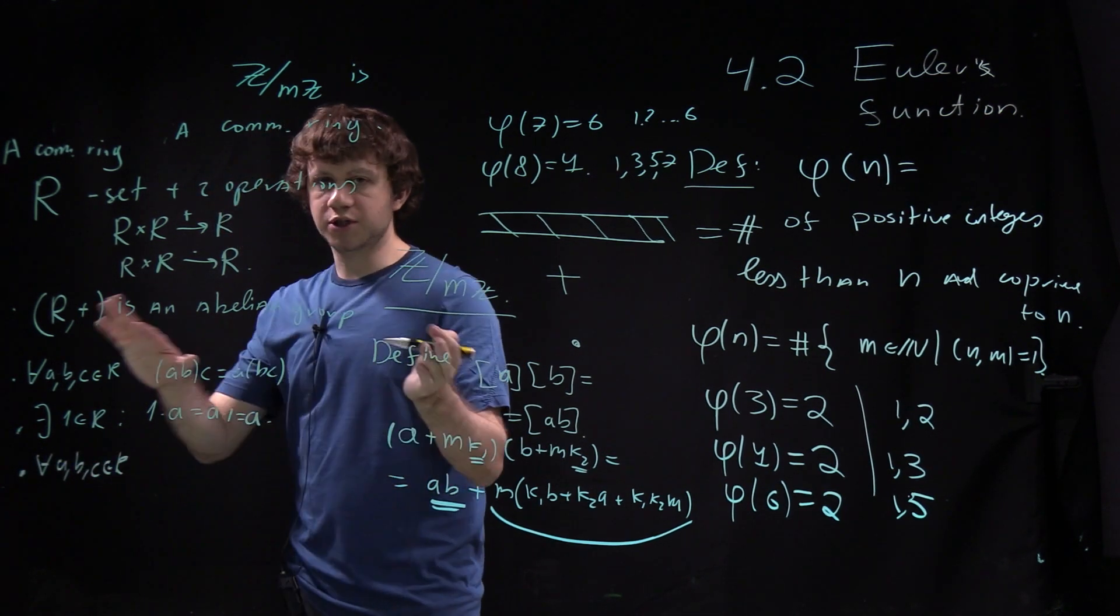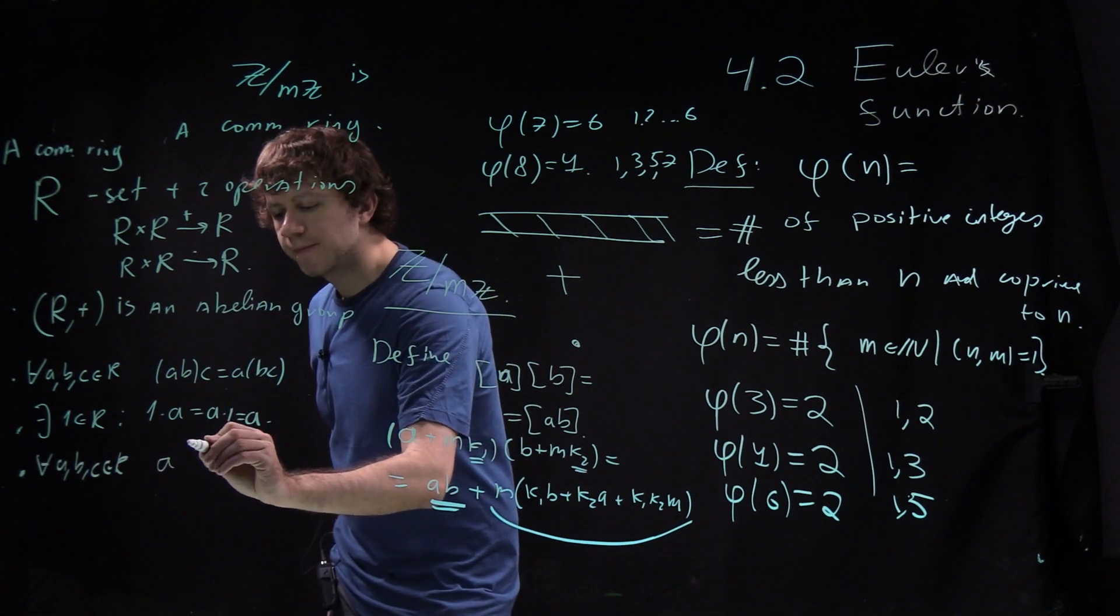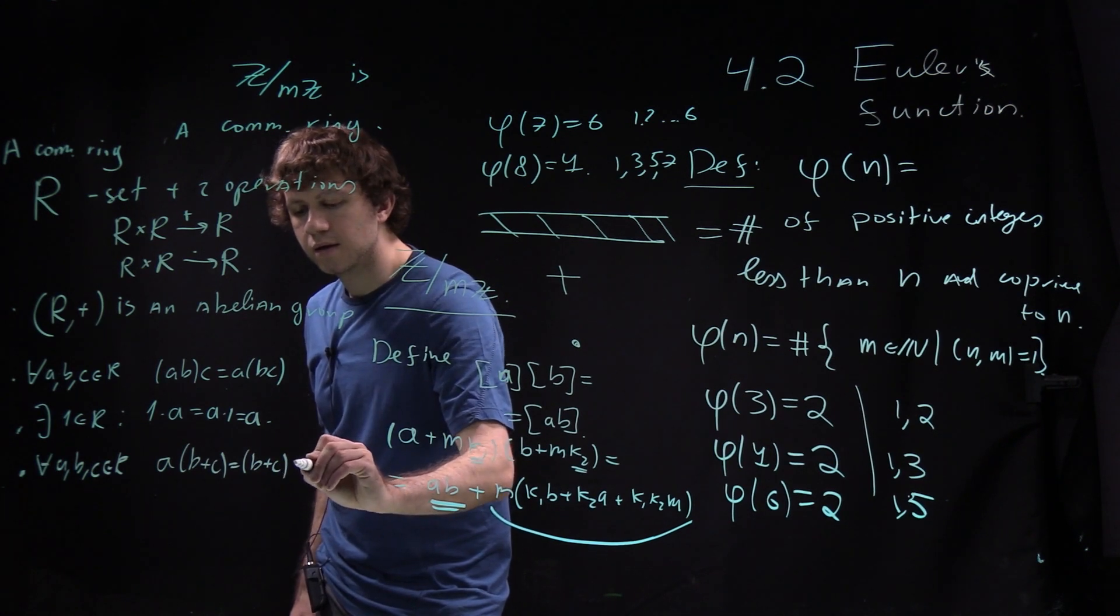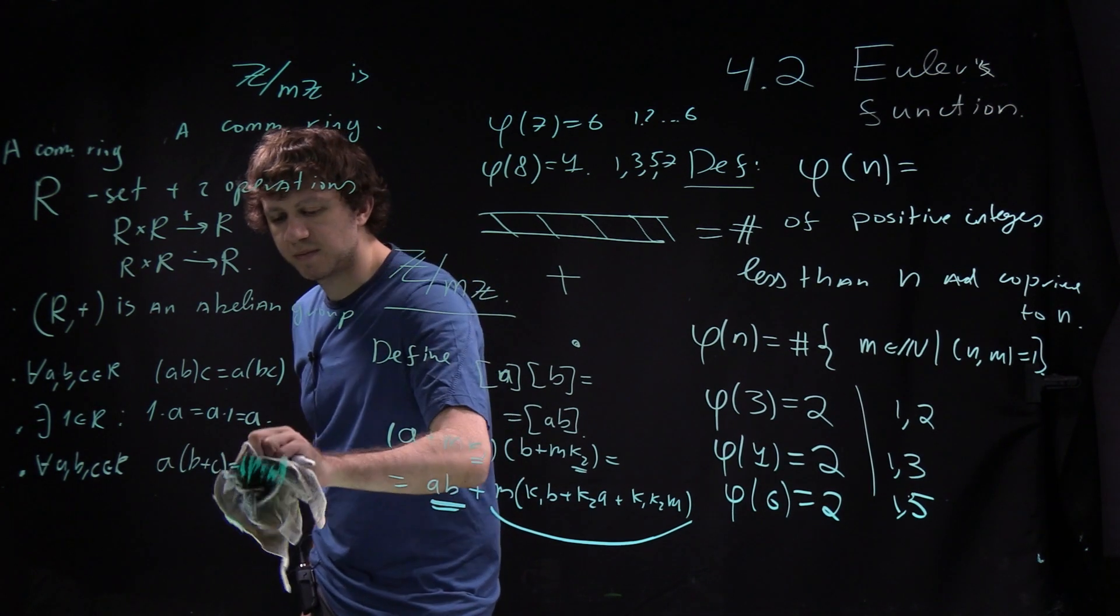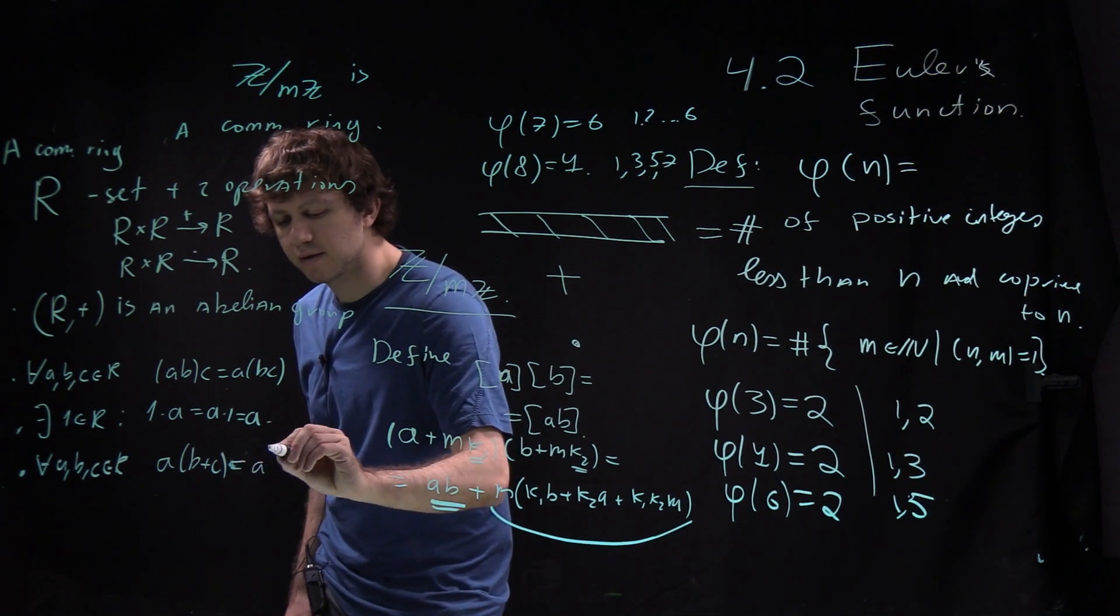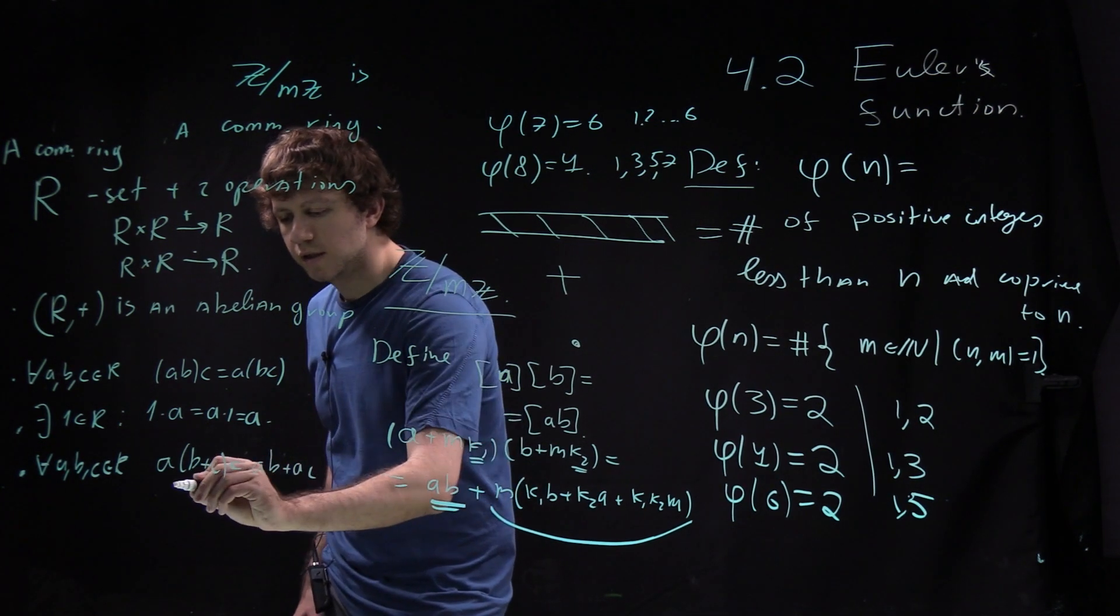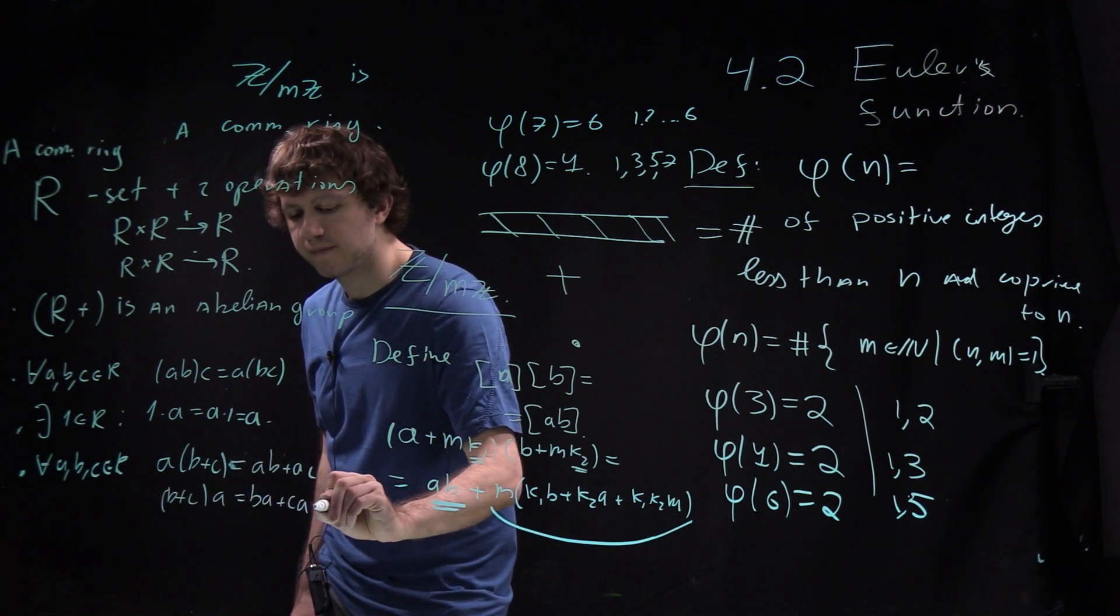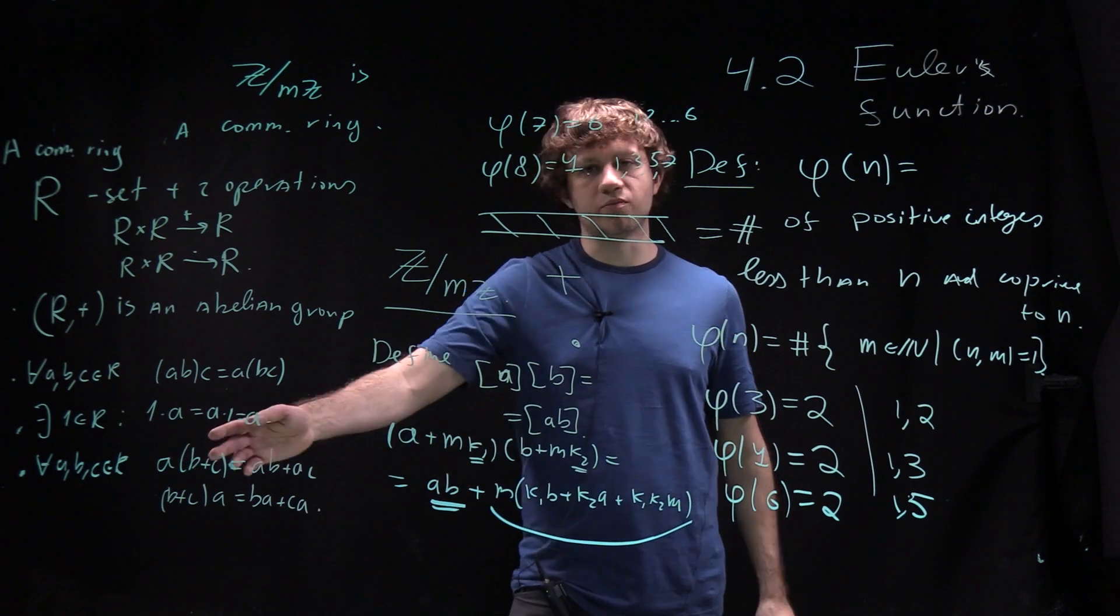A times B plus C equals AB plus AC, and B plus C times A equals BA plus CA. You can open brackets. That's the distributive law.